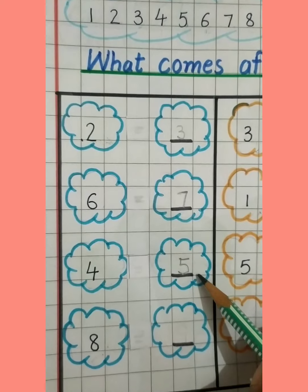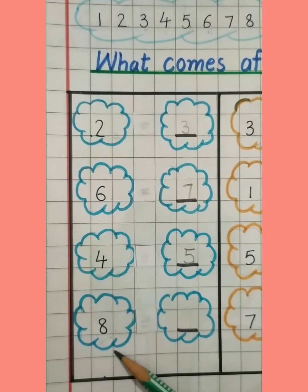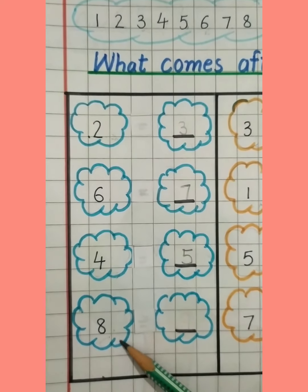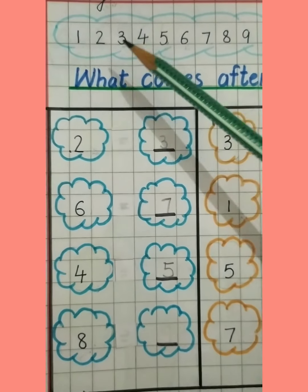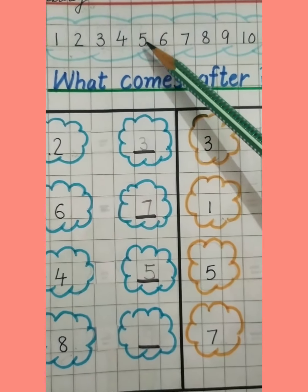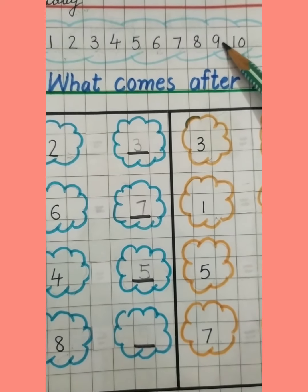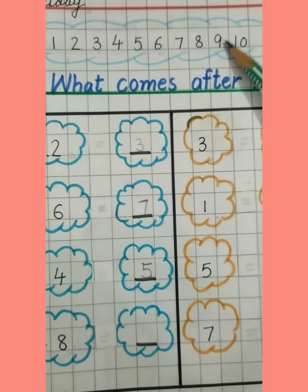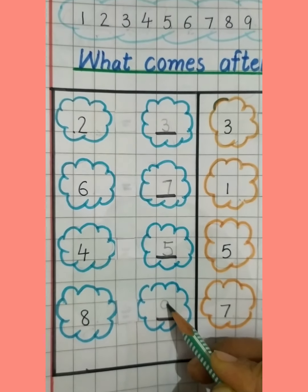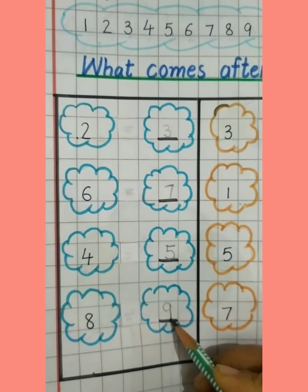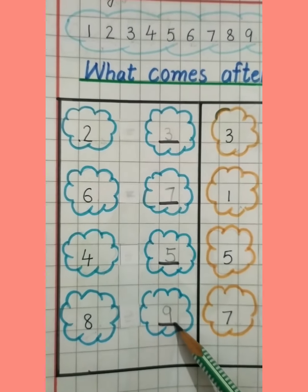Hamein yahan par 5 likhna hai. This is number 8. Number 8 — and what comes after 8? 1, 2, 3, 4, 5, 6, 7, 8 — and after 8 is 9. So we have to write 9 here. Number 9. After 8 is 9.